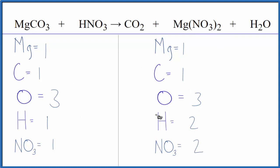So it makes it a little bit easier. It looks like everything is balanced here, except we need to double the hydrogen and double the nitrate ion. And to do that, all we have to do is put a two right here.